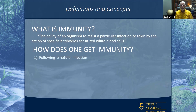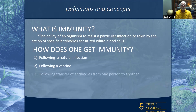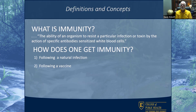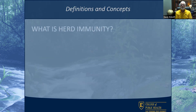One is following a natural infection — I get a disease, then I'm immune to it after that. Following a vaccine, I get a vaccine and I'm not going to get the disease. The two less common ways are a transfer of antibodies from one person to another, and mothers passing protection to their unborn babies. For most purposes, we'll focus on just the first two.